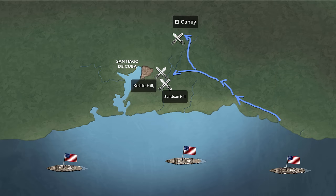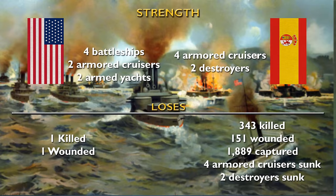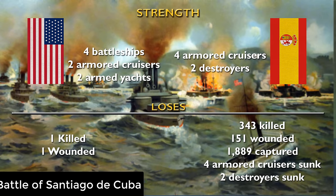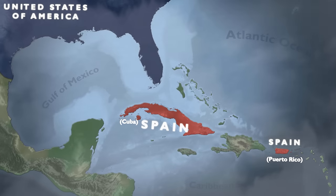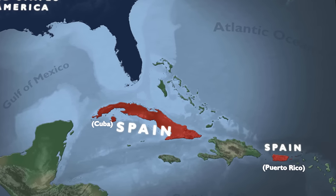Having no plan of stopping there, the Americans entered the city of Santiago the next day, and US naval forces destroyed the Spanish fleet as Admiral Pascual Cervera and his troops from Santiago attempted to flee on July 3rd. Two weeks later, the Spaniards surrendered the city and subsequently ended the war.